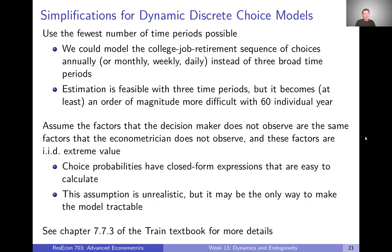Adding uncertainty makes things more difficult, but there are a couple of things we can do to simplify. One thing that helps with the curse of dimensionality is to use the fewest number of time periods possible. In the last video's example, we assumed only three time periods: college, job, and retirement. We could have done it annually — 60 time periods instead of just three — but that adds at least an order of magnitude to the curse of dimensionality. So bundling things into broad time periods to minimize the number of periods can be very helpful.